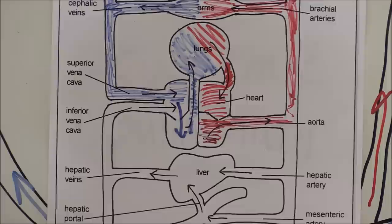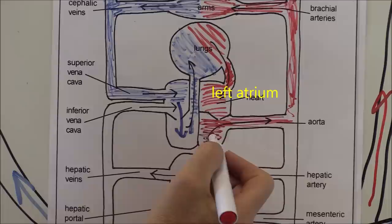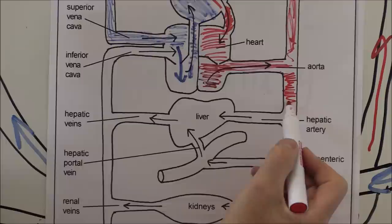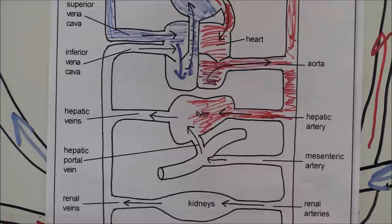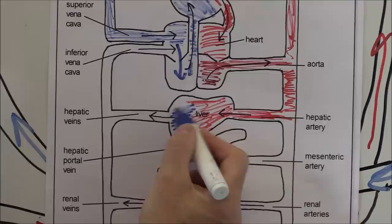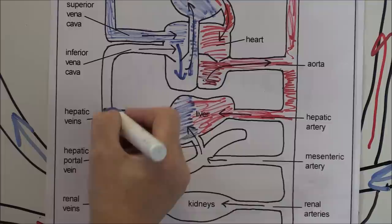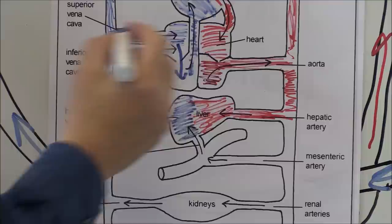It drains back via the pulmonary veins to the left atrium, ready to go to the left ventricle to be pumped out again into the systemic circulation. Blood also goes down through the body towards the liver via the hepatic artery. As the blood goes through the liver it will be partly deoxygenated, meaning the hepatic veins are carrying deoxygenated dark red blood back into the inferior vena cava, which drains back into the right atrium, ready to go to the right ventricle, then to the pulmonary artery, and back to the lungs to be oxygenated.